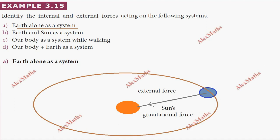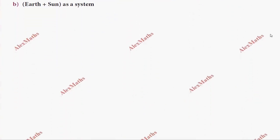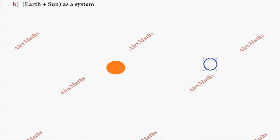So, in this sub-question we have to consider earth alone as the system. Due to the gravitational pull of the sun, and it orbits around the sun.